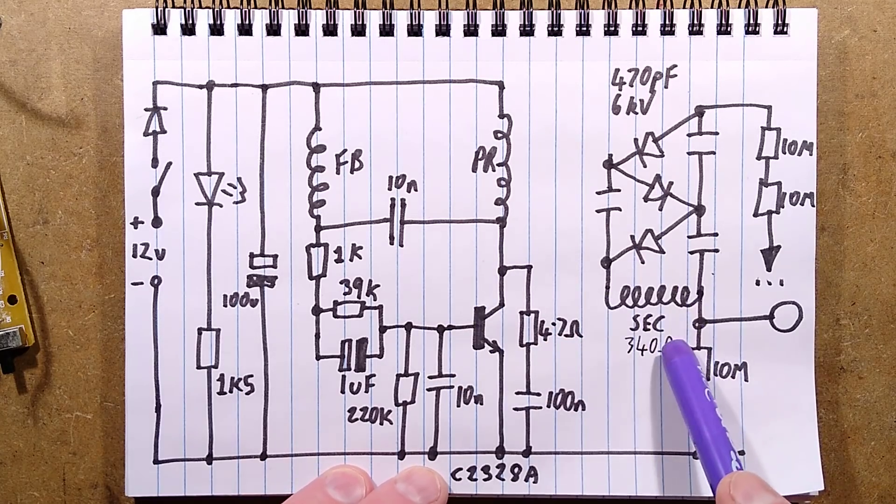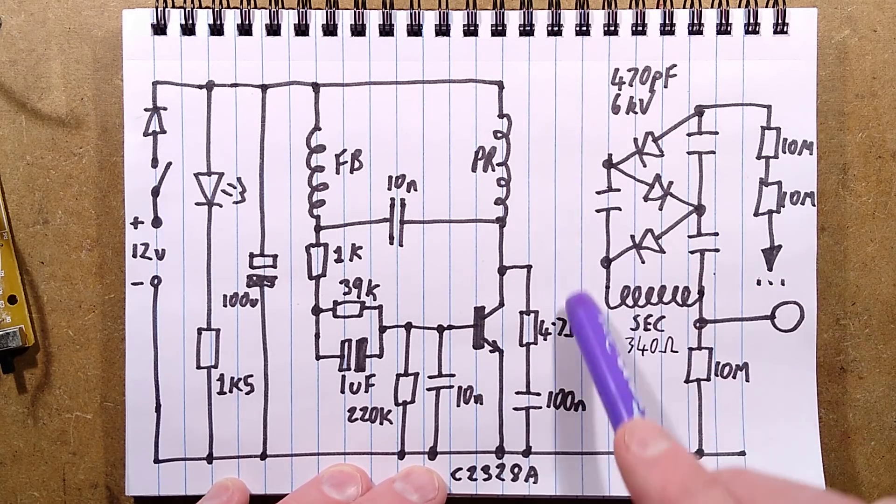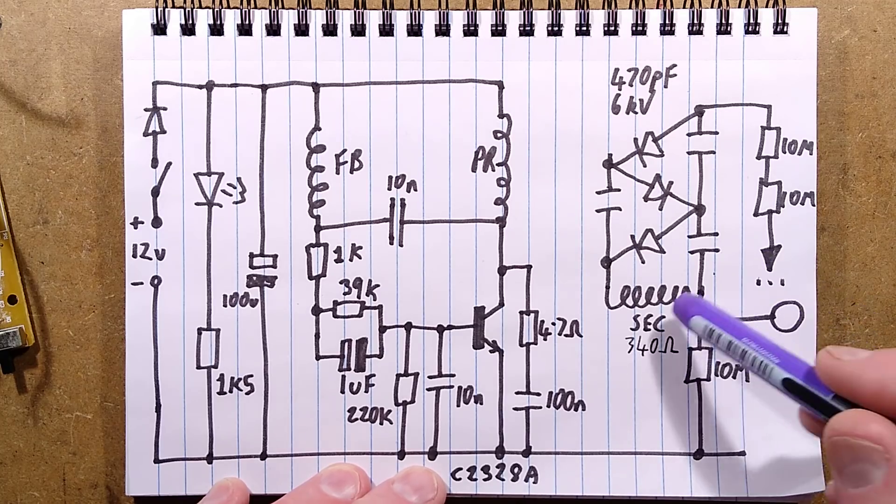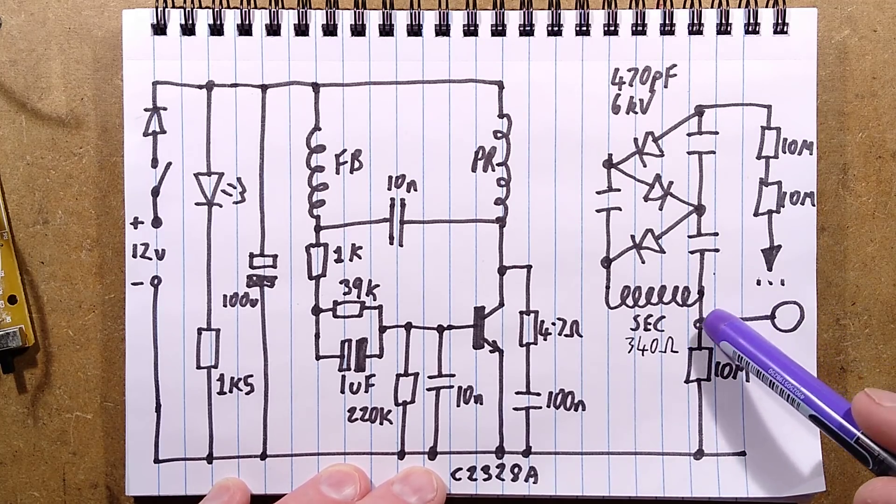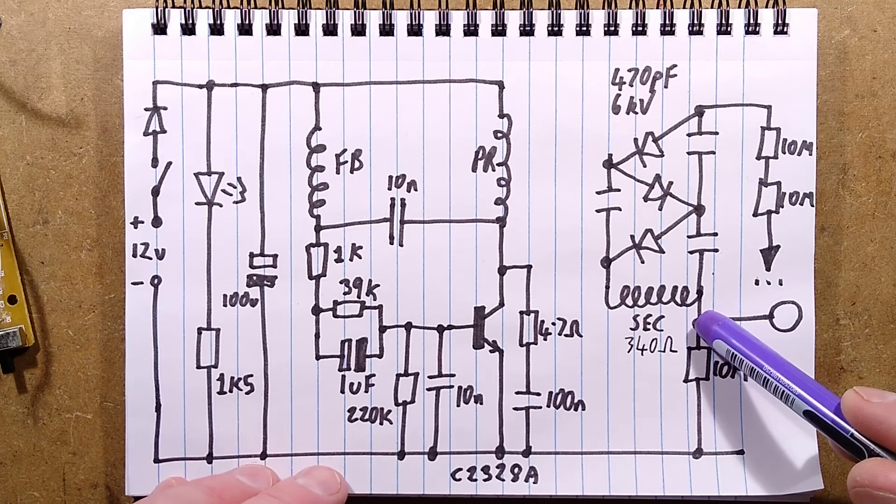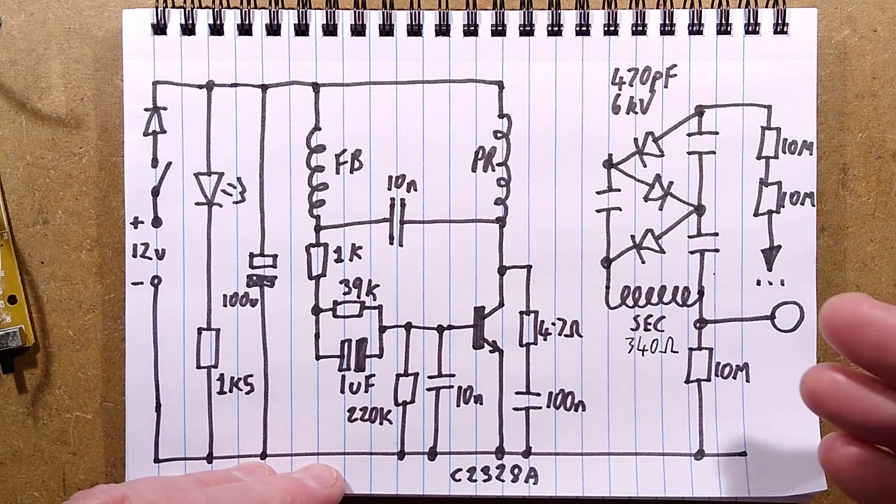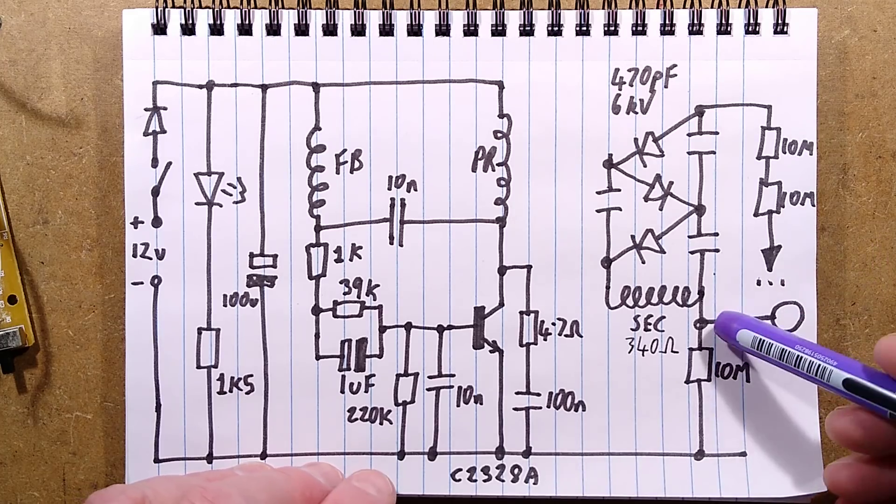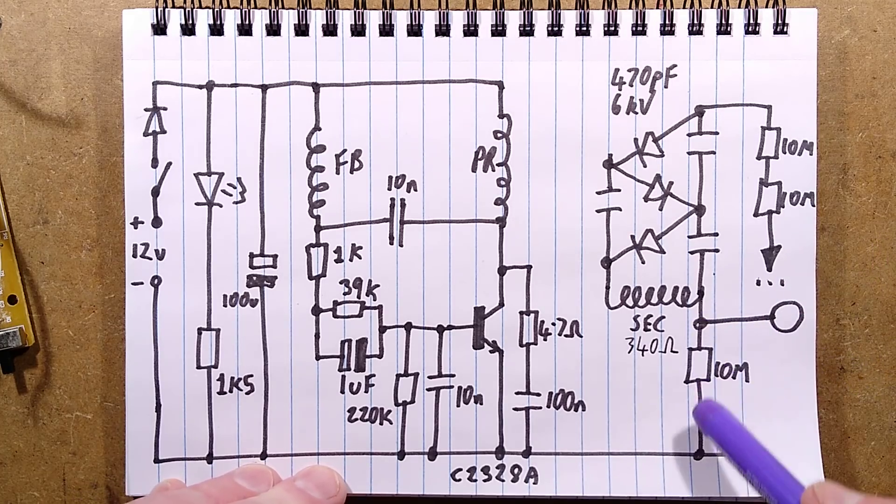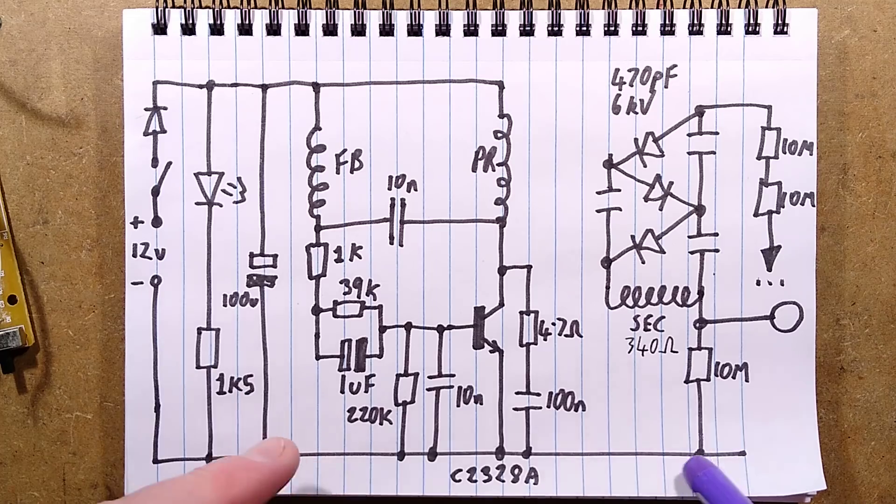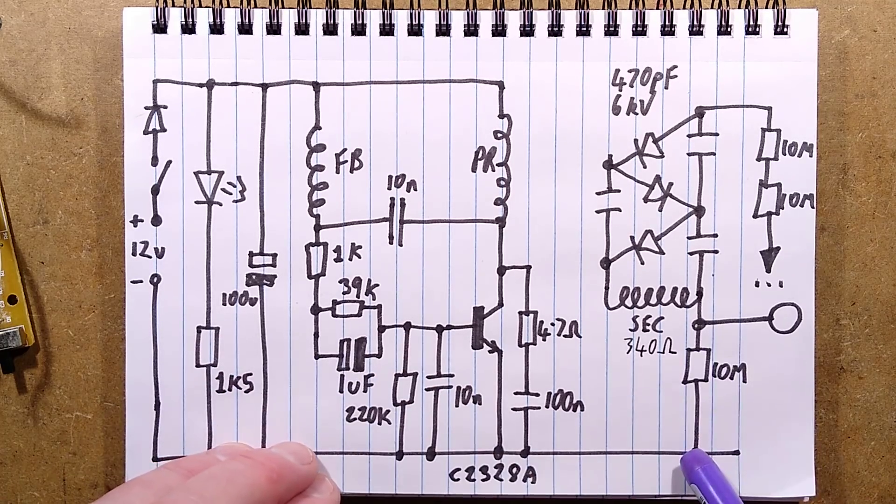The secondary winding over here is effectively treated as a separate winding, although it's in the same bobbin. It has its own two terminals. The zero volt reference, I presume this is to avoid flashover on the transformer, but the zero volt side of it, the positive side actually, is connected to the zero volt rail of the primary side by this 10 mega ohm resistor.